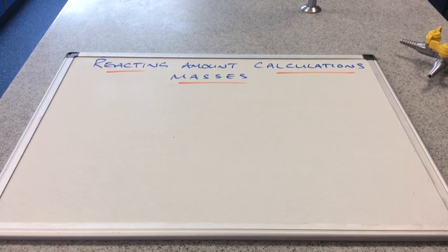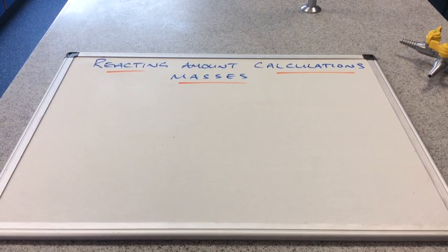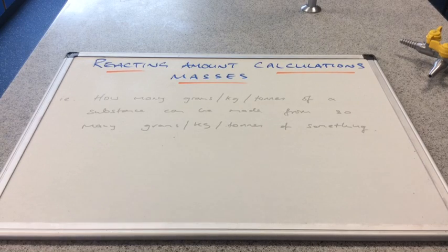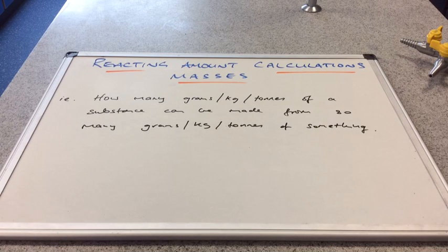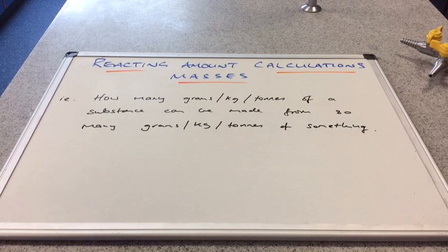In this video I'm going to look at reacting amount calculations that involve masses of chemicals. These calculations tend to get you to calculate how many grams, kilos, or tons of a substance could be made from a given mass — which could be in grams, kilos, or tons — of something else.